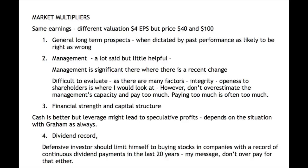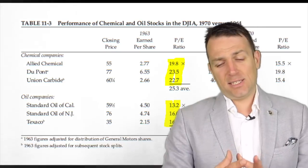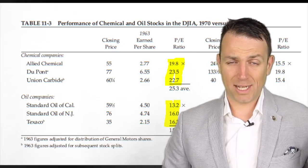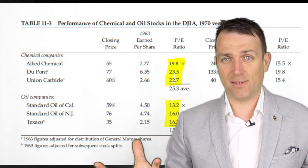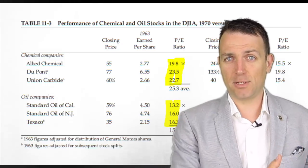On factors affecting valuations, Graham looks at market multipliers and says it's not ideal to apply different valuations to the same earnings. For example, general long-term prospects were very positive for chemical companies back then but not for oil companies. However, in 1963 expectations were good for chemicals, yet oil companies ended up having much better returns and earnings from 1963 to 1970. This raises the question: are you an absolute investor looking at absolute returns and business yields, or a relative investor? Graham is more an absolute investor — give me earnings, that is what gives me my returns.